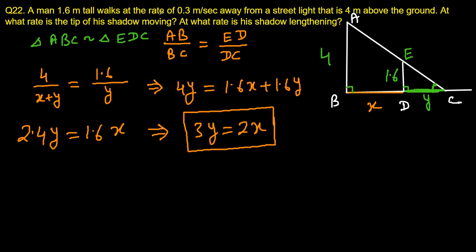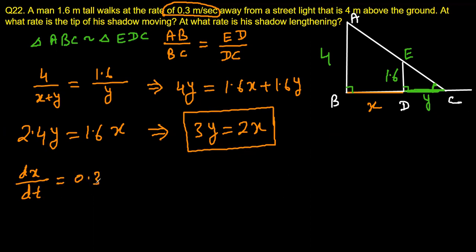We are also given that the man walks at 0.3 meters per second away from the lamppost. Since x is the man's distance from the lamppost, dx/dt = 0.3 meters per second.